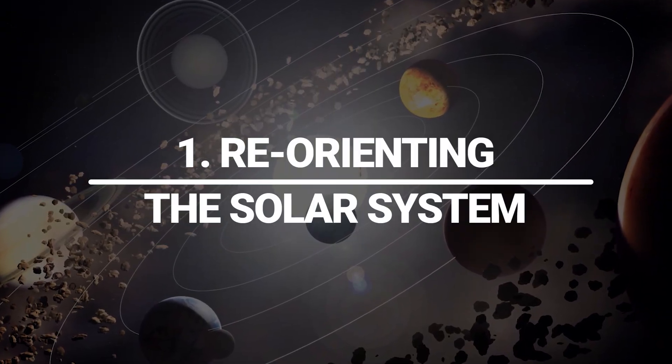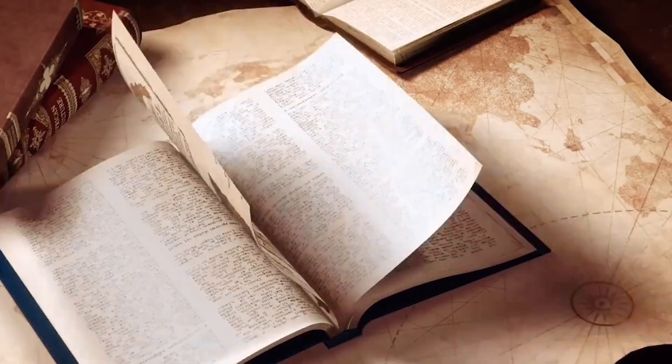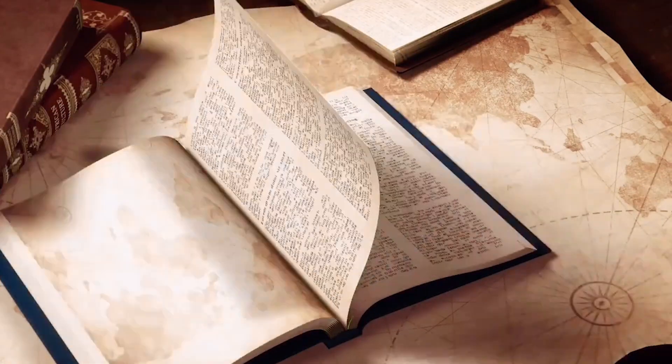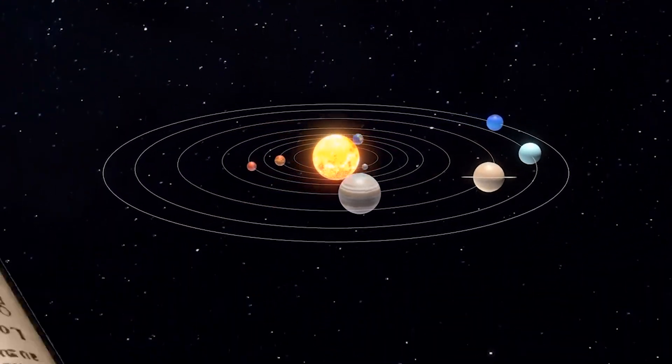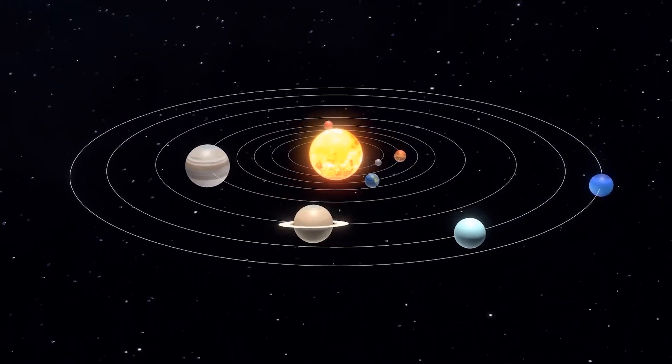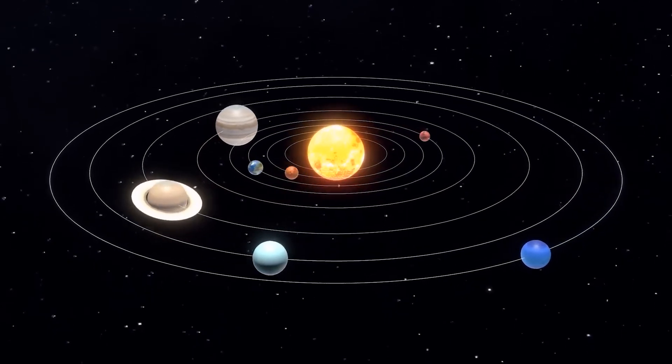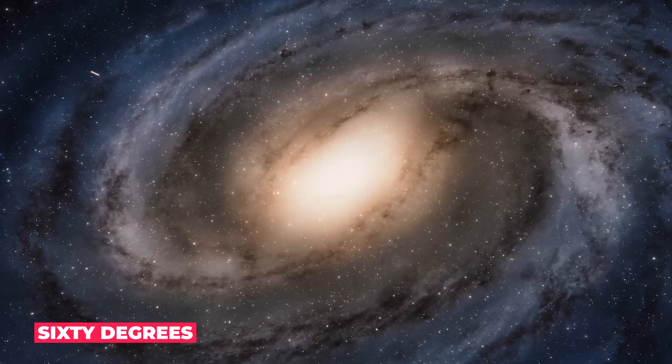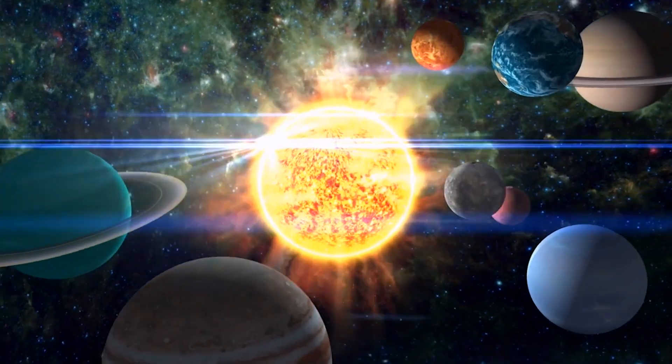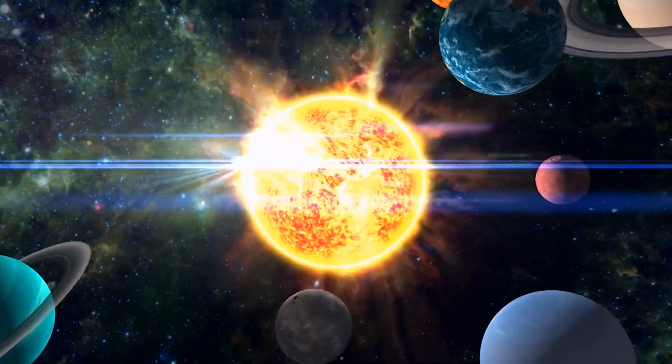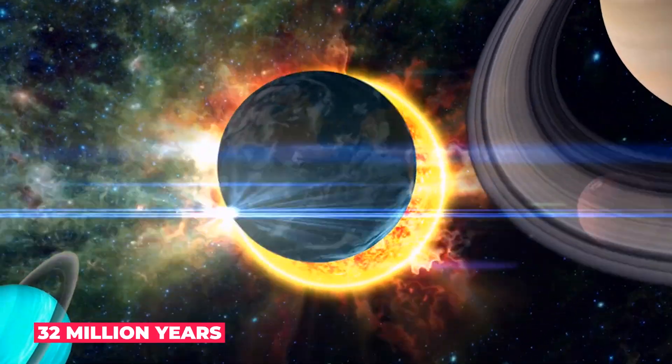Re-orienting the solar system. Most textbooks show the planets as if they were beads threaded on a tabletop string. That 2D picture is convenient but misleading. In reality, the ecliptic, the plane traced by Earth's orbit, is tilted about 60 degrees relative to the Milky Way's disk and the Sun itself oscillates up and down through that disk every 32 million years or so.